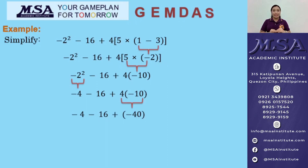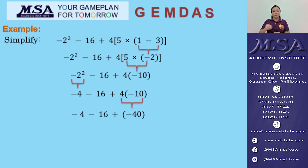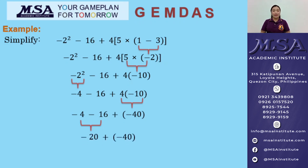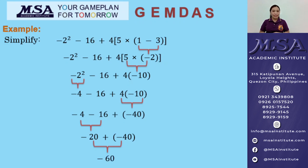A and S — addition and subtraction as they occur from left to right. In our expression, subtraction comes first before addition, so we subtract: negative 4 minus 16 gives us negative 20. Then the final step: negative 20 plus negative 40 equals negative 60. So the final answer is negative 60.